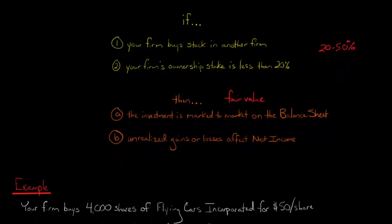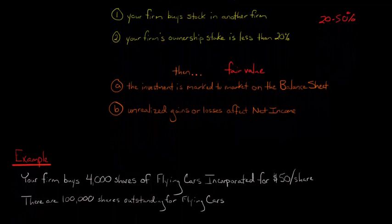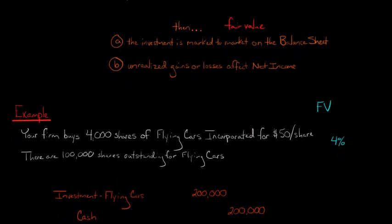Let me show you an example to show you how the fair value method would play out in practice. Let's say that your company buys 4,000 shares of another company called Flying Cars Incorporated, and your company pays $50 a share for those 4,000 shares. Now Flying Cars Incorporated has 100,000 shares outstanding total, so you own 4%. Because you own less than 20% of Flying Cars Incorporated, you're automatically going to use this fair value method.